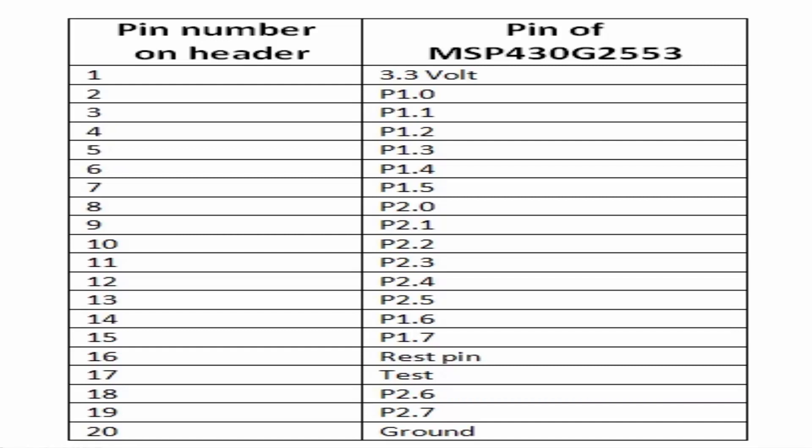This table shows the complete pin mapping of the MSP430 launchpad with the MSP430G2553 microcontroller. Pin number 1 of the header is 3.3V, pin number 2 is P1.0, pin number 3 is P1.1 which is port 1 pin 2. Similarly, pin number 10 is P2.2, which is pin number 2 of port P2. You can see the mapping of all the ports as well.